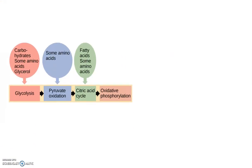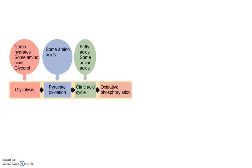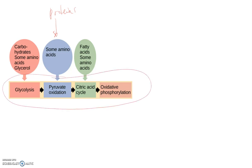We followed one molecule of glucose and saw how it was completely broken down into carbon dioxide, and now we've seen how ATP is actually generated. Other nutrients we ingest — like proteins broken down into amino acids, carbohydrates, and fatty acids from fats — all enter cellular respiration at different points. Some enter directly into glycolysis, some enter at the prep step where pyruvate is converted to the acetyl group, and some enter directly into the Krebs cycle. All of these are energy-generating and will be used by the cell to produce ATP.